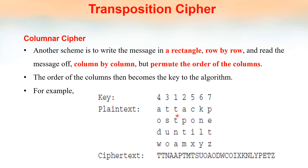So the first column, TTNA, is written first. Then the second column, APTM, is written next. In that order, the cipher text is written. The order of the columns becomes the key to the algorithm.